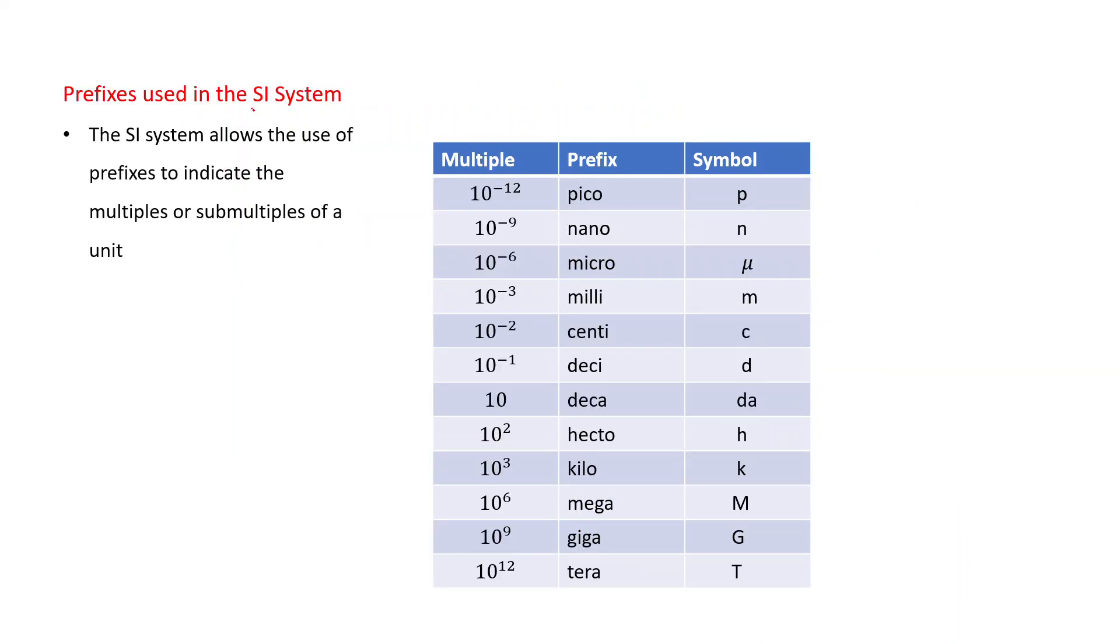Prefixes used in the SI system. The SI system allows the use of prefixes to indicate the multiples or submultiples of a unit. It means if you want to represent any larger quantity or smaller quantity, then we use these prefixes. For example, 10 to the power minus 12, this is pico, symbol is p. I think you are familiar with this unit, picometer. Generally, the atomic distance is measured in this picometer. That is 10 to the power minus 12 meter.